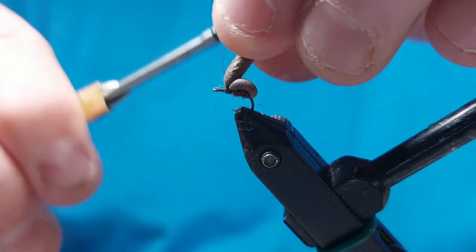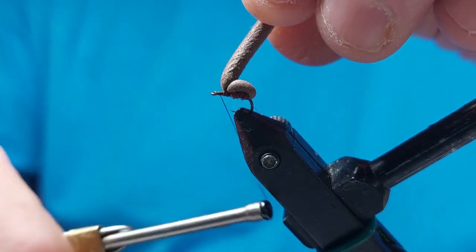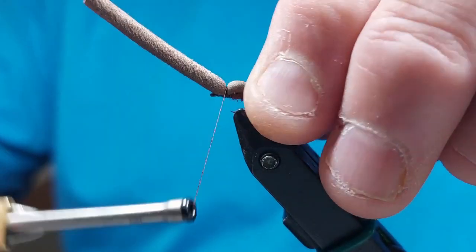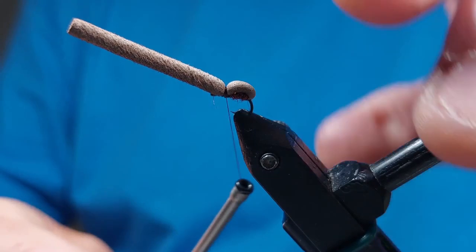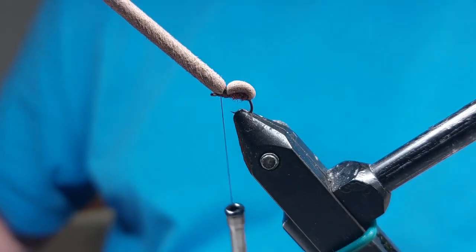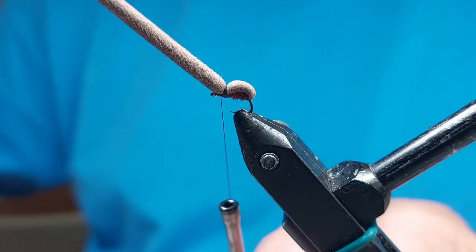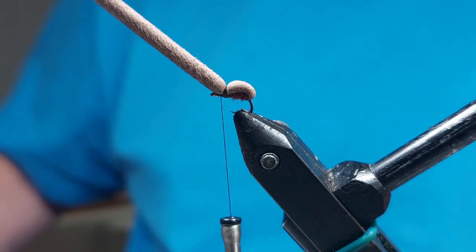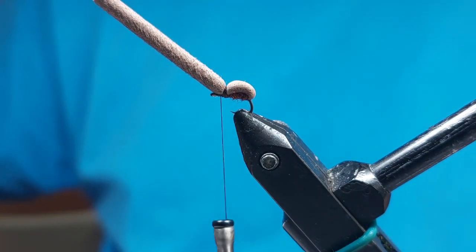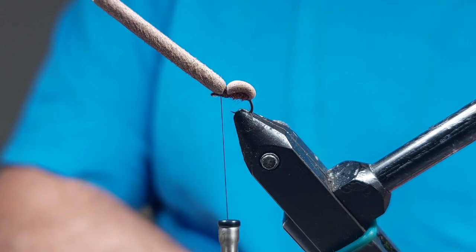Take that through round to the front. Now we're here we'll put a little bit of super glue on that thread to hold it in position.